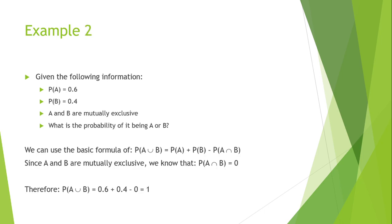Example 2: more or less the same given information, but now A and B are mutually exclusive. We again calculate the probability of A or B using the basic formula. Since A and B are mutually exclusive, the probability of A and B equals 0, so that part of the formula drops away. Therefore, probability of A or B is just 0.6 plus 0.4, giving an answer of 1.